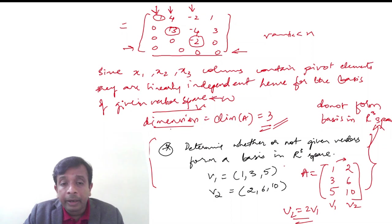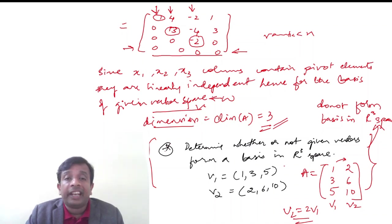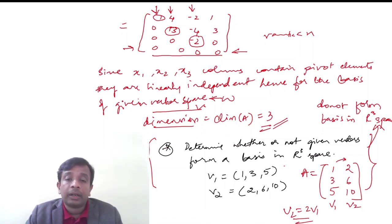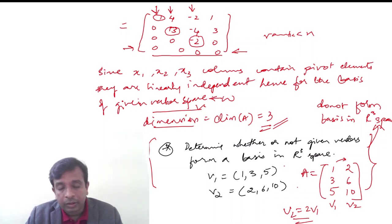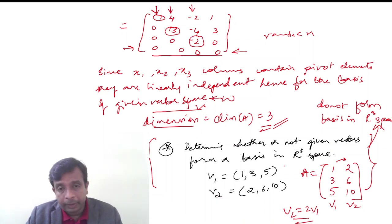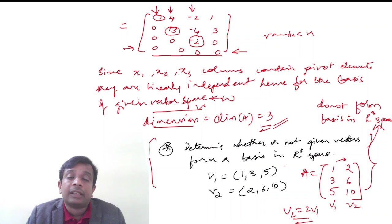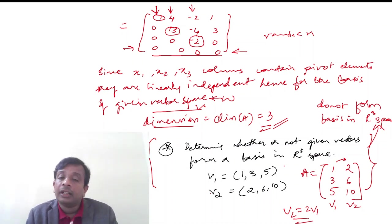Keep in mind: if all vectors are independent there is nothing further to check, but if vectors are generally dependent, some column vectors among them may still be mutually independent. As a practice problem, check if the given vectors v1 = [1,3,5] and v2 = [2,6,10] form a basis in R3. Hint: if one vector is a multiple of another, they are not independent and do not form a basis.